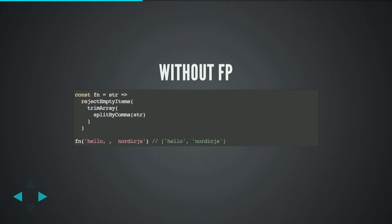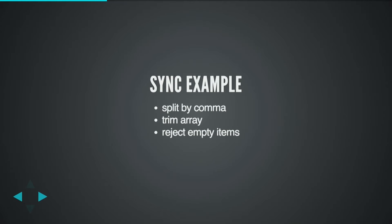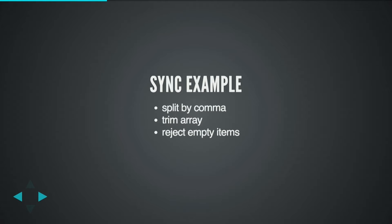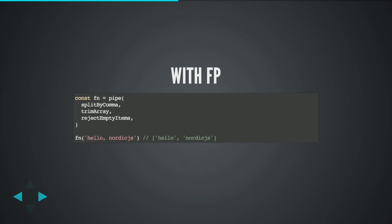What can we do? We have these three instructions and we can convert them into declarative code. This will look like this: the first function splits by comma, returns the result to the second function, which trims the array, and then we reject empty items. This works perfectly fine and this is declarative.